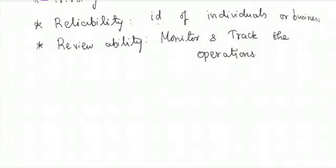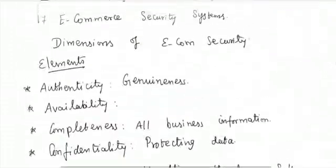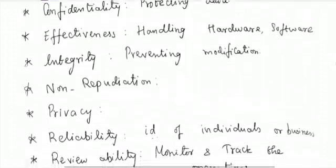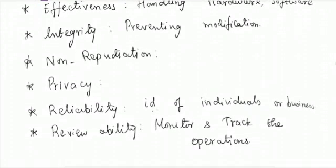So we are clear with the dimensions we have discussed — totally 10 dimensions. The first one is authenticity, next availability, next completeness, next confidentiality, next effectiveness, integrity, non-repudiation, privacy, reliability, and finally reviewability. So we have completed the dimensions of e-commerce security. We will continue in the next class. Thank you, students.